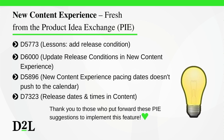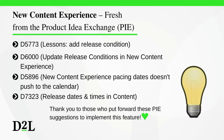The new content experience feature implements the following PI items: d5773, lessons — add release condition; d6000, update release conditions in new content experience; d5896, new content experience pacing dates doesn't push to the calendar; and d7323, release dates and times in content.